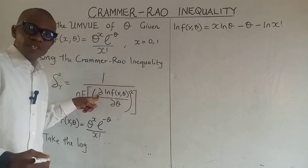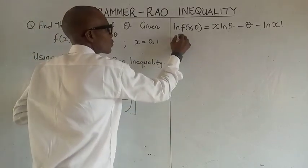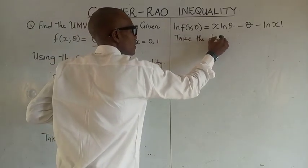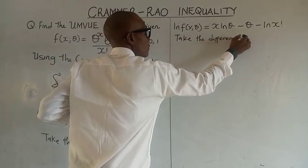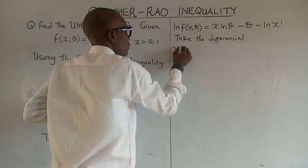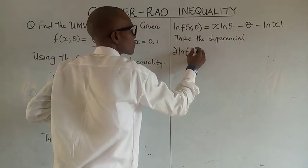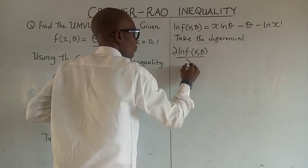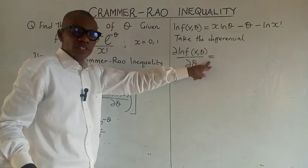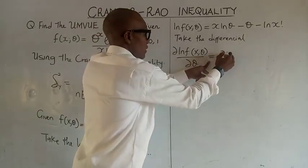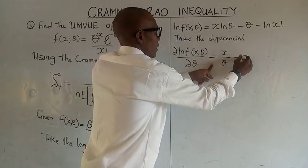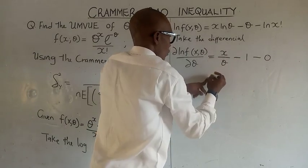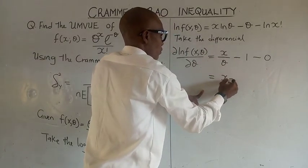The next thing to do is to take the differential — we differentiate with respect to the parameter theta. To differentiate this, we get x over theta. To differentiate the next term, we get minus 1. To differentiate the log x factorial term, we get 0. So we'll get x over theta minus 1.